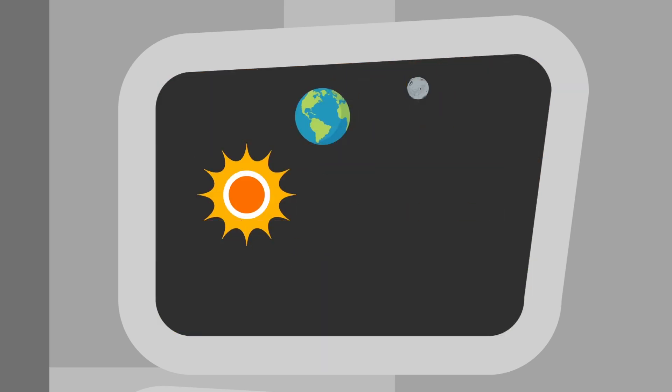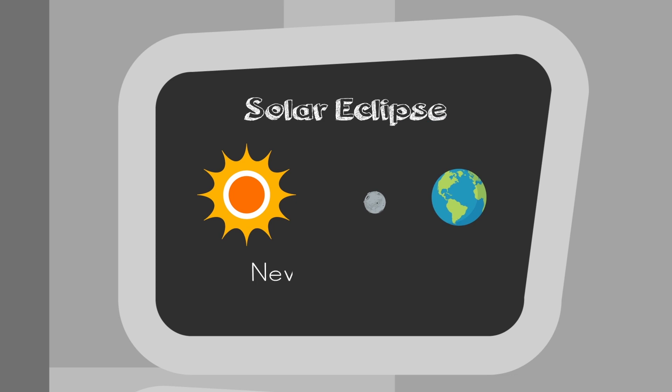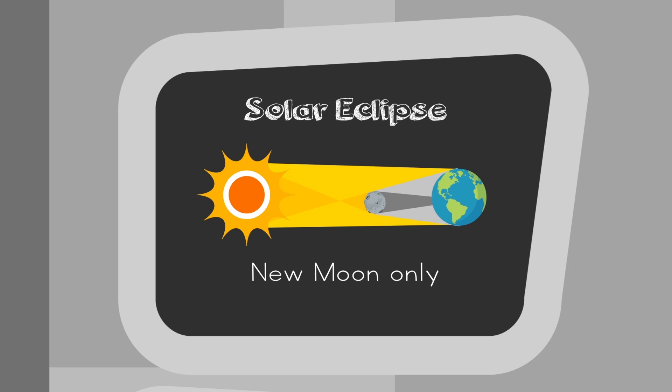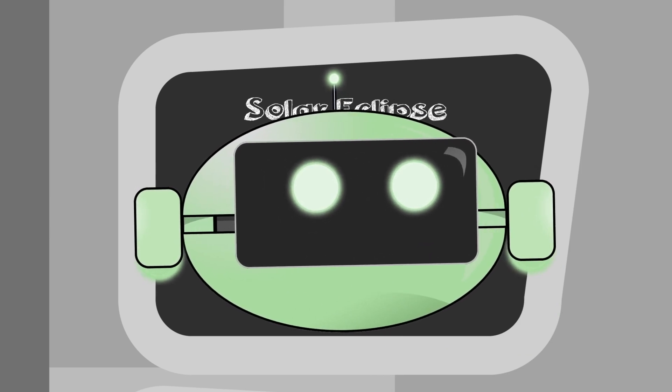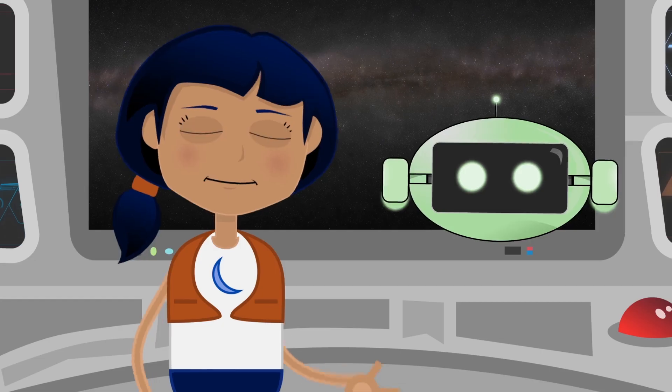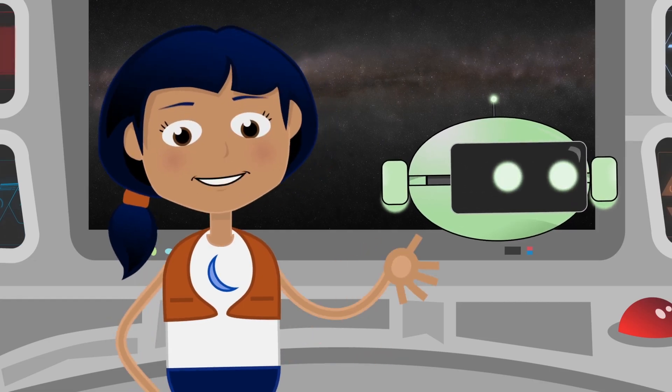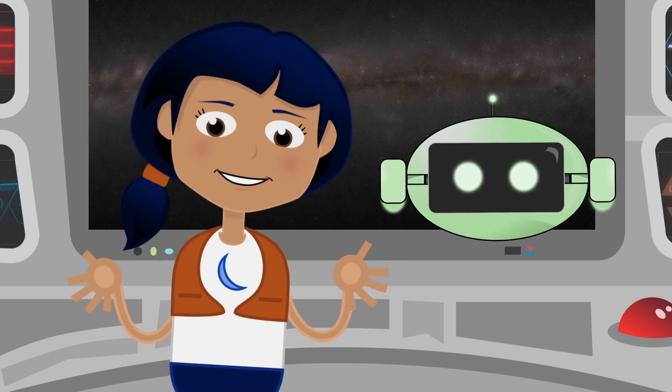The other special event that can occur is a solar eclipse. This only happens when the Moon is a new Moon and is lined up perfectly between the Sun and Earth. So the Moon appears to block out the Sun, either partially or totally. Oh wow. It must be surprising to see something blocking the Sun. It is. But now that we know what's going on, we don't have to be worried when it happens.